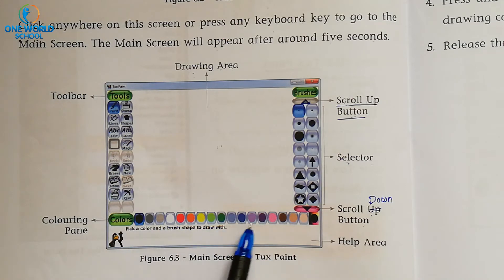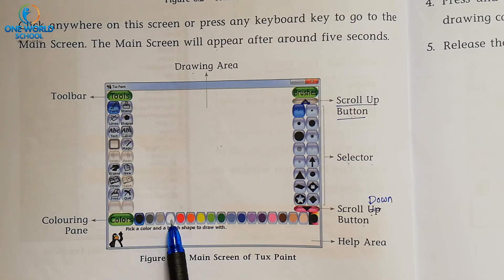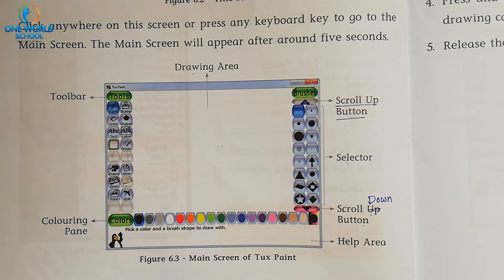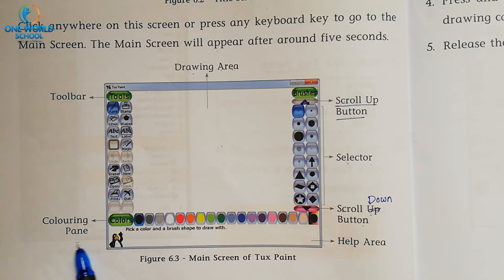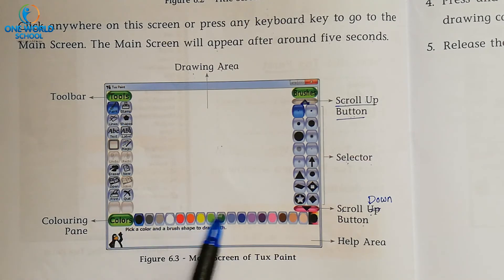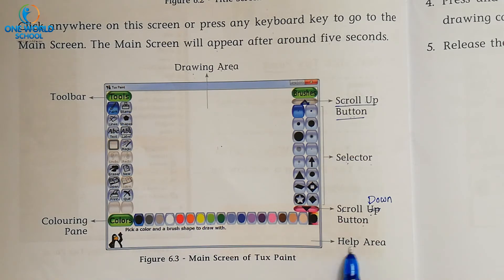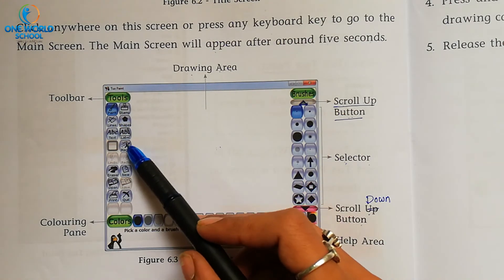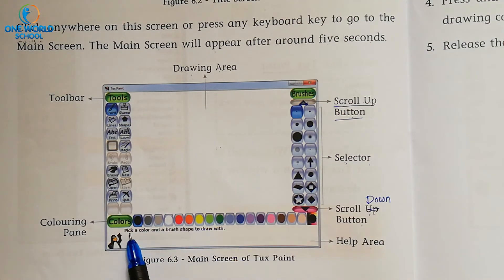You can see many colors are given: black, light black, gray, white, red, orange, yellow, light green, dark green, light blue, dark blue, purple, brown, pink, and many more. In Tux Paint, this is called the coloring pen, unlike MS Paint where we called it the color palette. Below this area is the help area, where information is displayed when you click or select any tool.